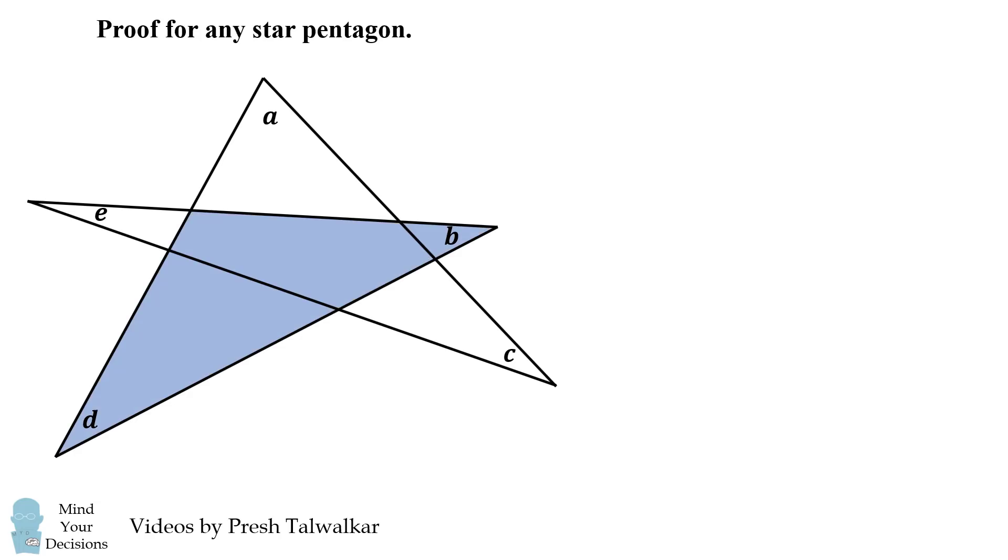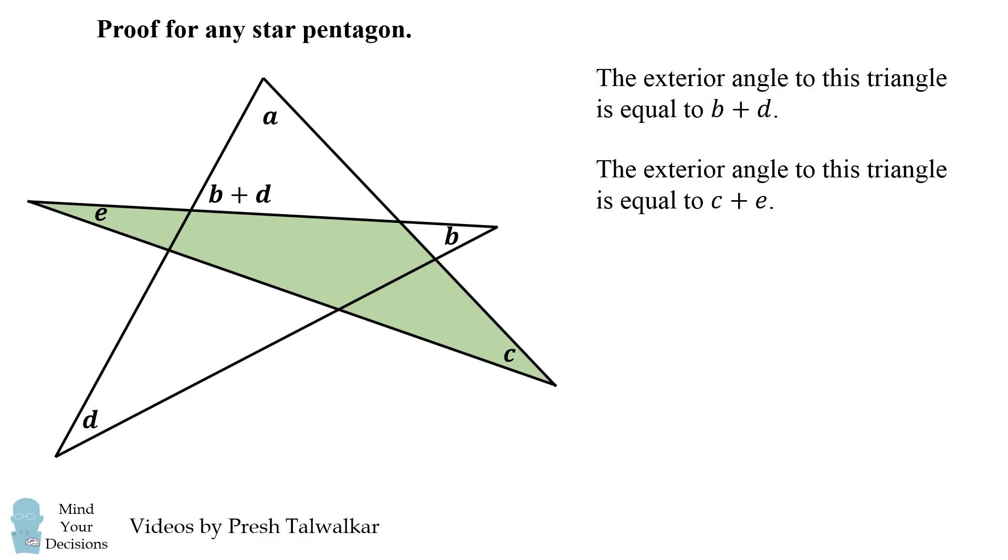Take a look at this triangle which involves the angles B and D. The exterior angle to this triangle is equal to B plus D. That'll be this angle right here. Now take a look at this triangle which has the angles E plus C. By similar logic, the exterior angle to this triangle is equal to C plus E. That'll be this angle right here.